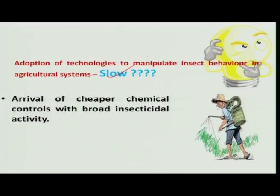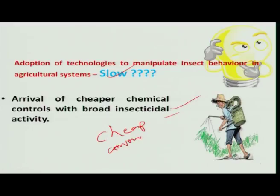This is because of the availability of cheaper chemicals which have broad spectrum activity against various insect pests. At the same time, they are cheap and quite convenient to handle, and thereby farmers opted for chemical protection rather than other means of protection.